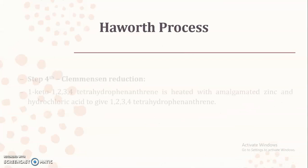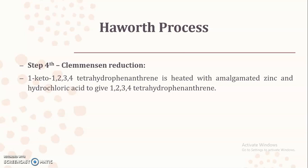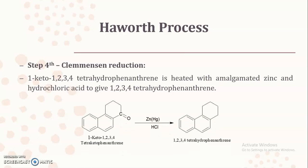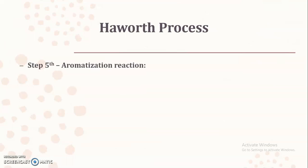The fourth step is again Clemmensen reduction, because the ketonic functional group at position 1 needs to be converted to an alkyl group. 1-keto-1,2,3,4-tetrahydrophenanthrene is heated with zinc amalgam and hydrochloric acid, and the carbonyl group is reduced — the oxygen is removed — to give 1,2,3,4-tetrahydrophenanthrene.